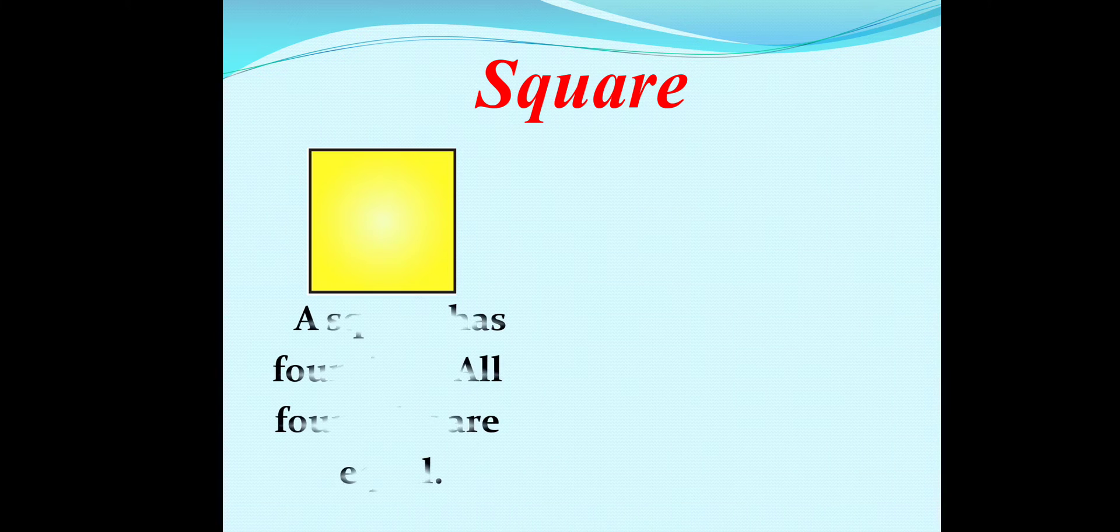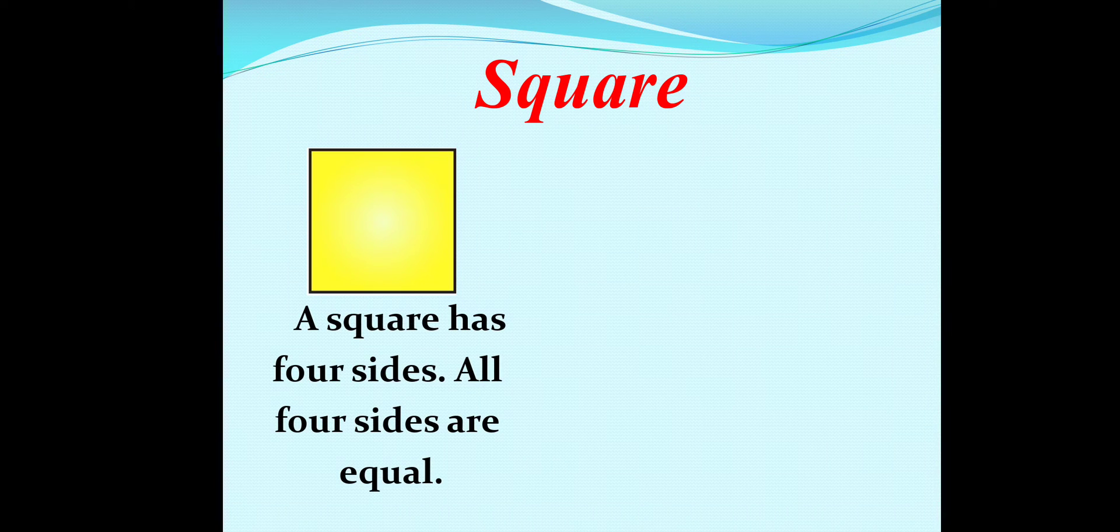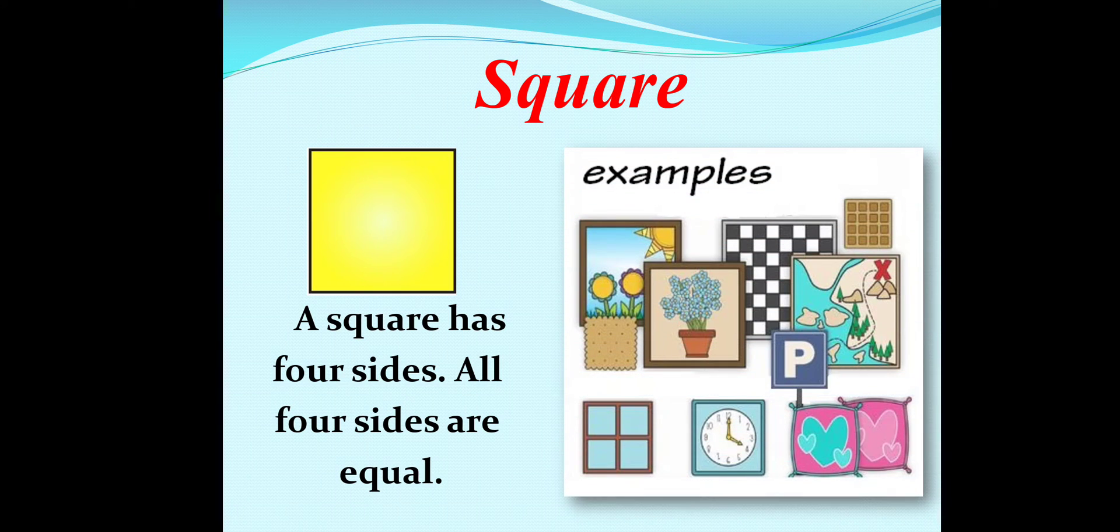Now, let's go for square. This shape is called a square. A square has four sides. All four sides are equal. There are many examples for square. Some examples are in this picture: photo frame, clock, biscuit, window, pillow, chess board, sign board.